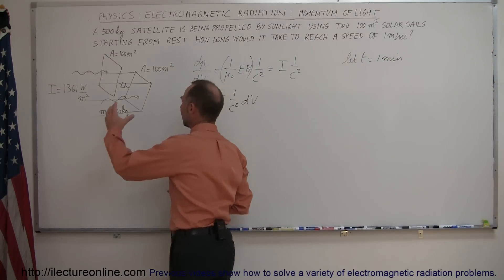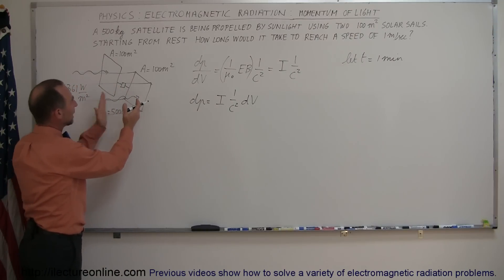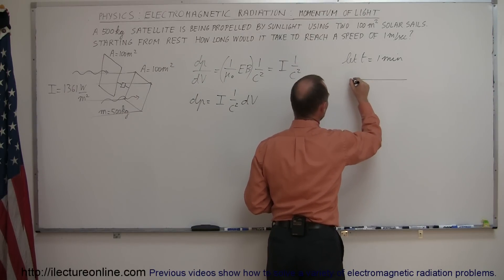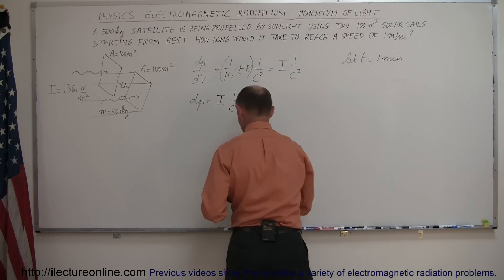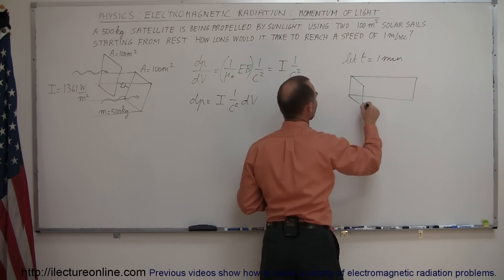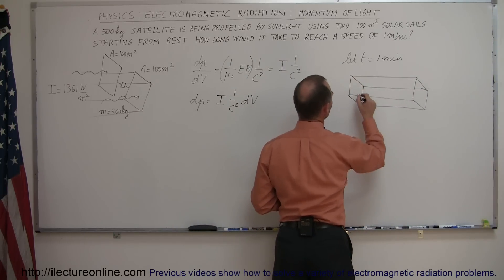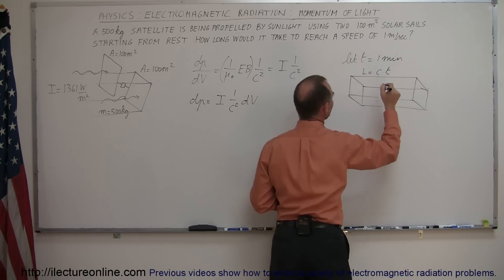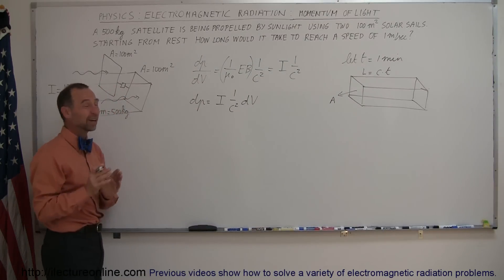How much sunlight will be hitting the sail? What would be the volume of sunlight hitting the sail over a period of one minute? Imagine this volume of sunlight as a rectangular prism. The length is equal to the velocity times the time, and the cross-sectional area A would be the same as the surface area of the sails — that's 100 square meters.